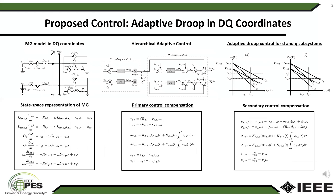The overall microgrid model is shown on the left-hand side and the corresponding state space representation is shown at the bottom. The center at the top shows the hierarchical structure of the adaptive control in this work, and at the bottom the primary control compensation for power sharing is shown. The droop curve and droop settings are shown on the right-hand side and the secondary control compensation dealing with curve shifting is shown at the bottom.